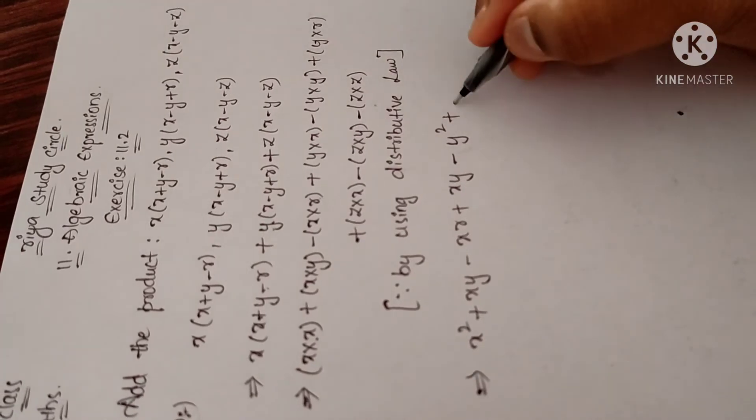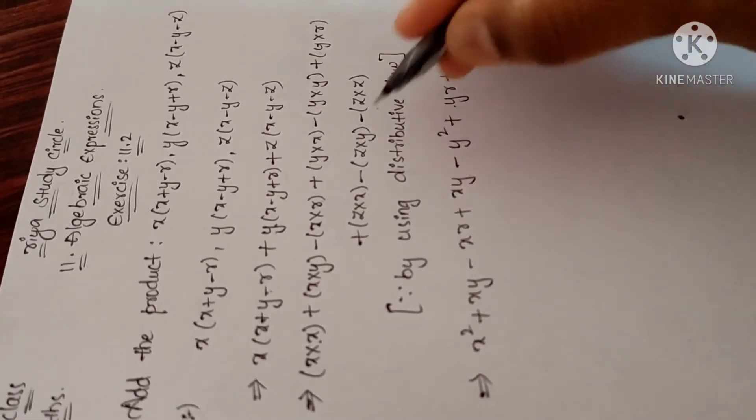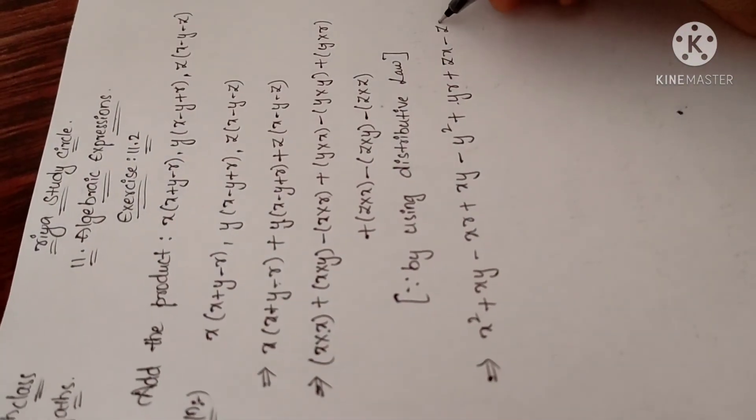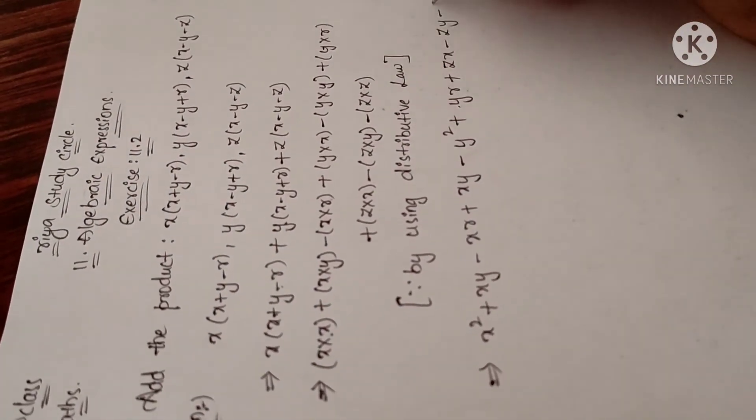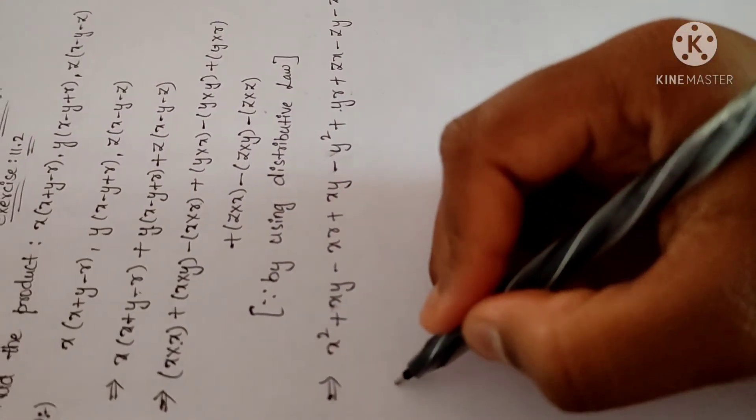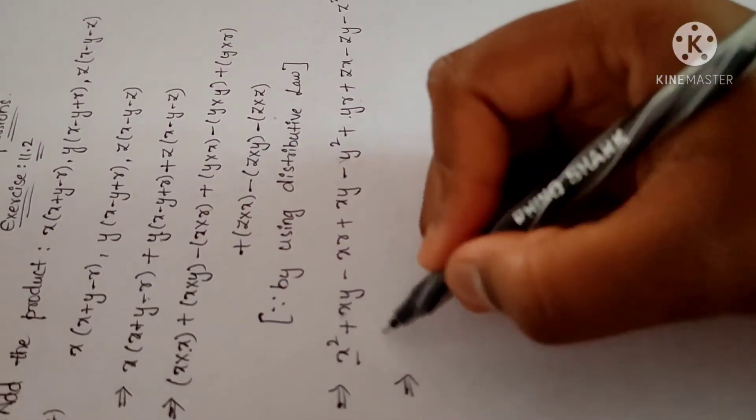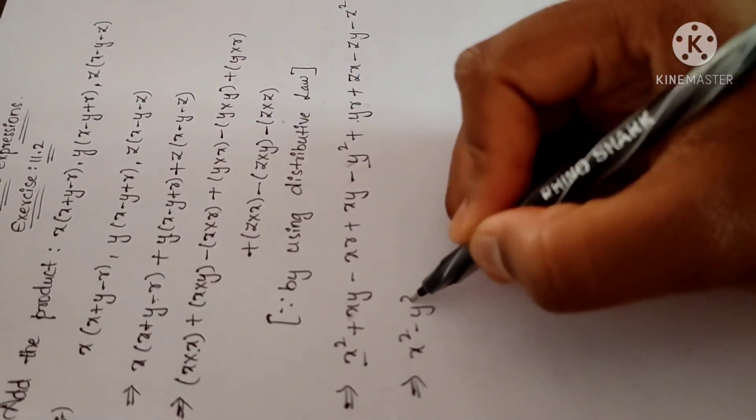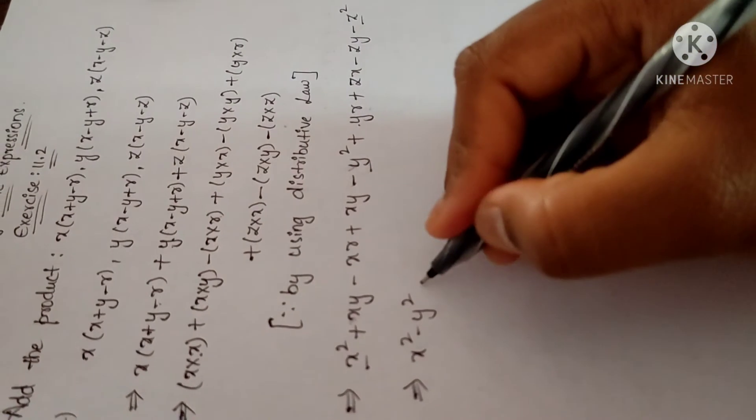Plus y into r is yr, plus z into x is zx, minus z into y is zy, minus z into z is z squared. Now we have to write in order: that means x squared minus y squared minus z squared.